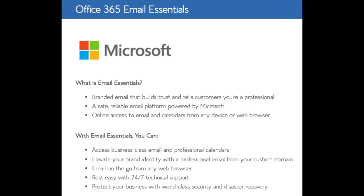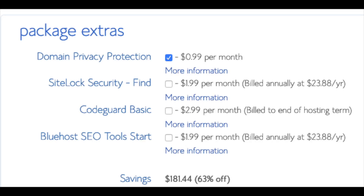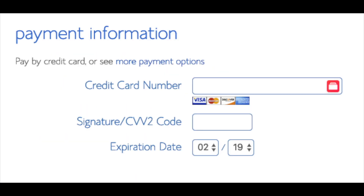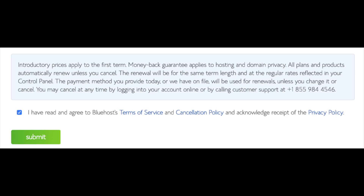Office 365 Email Essentials is the email software Microsoft Outlook, commonly included with Microsoft Office. If you'd like your email powered by this Microsoft add-on, feel free to keep it selected, but it isn't necessary. All of these add-ons are completely optional and up to you. Below that you will input your payment information. Once everything is filled in, select 'I have read and agree to Bluehost's privacy policy and terms of service,' then click the submit button.